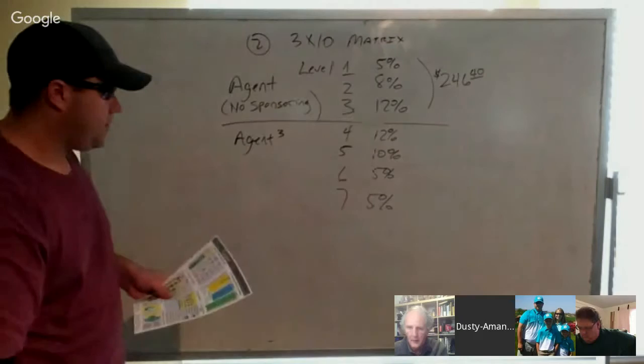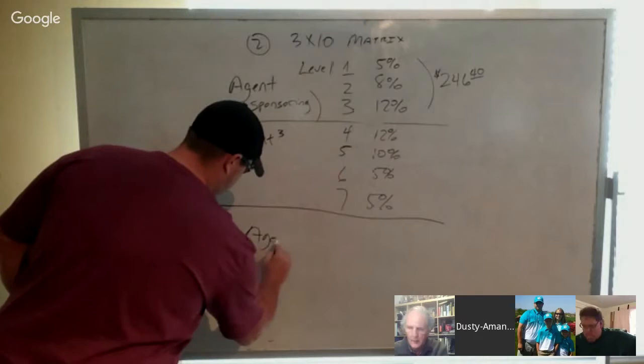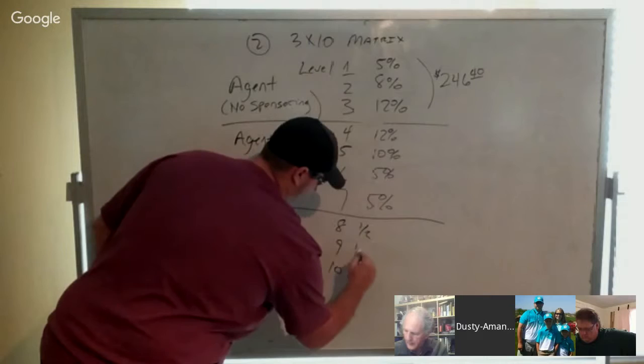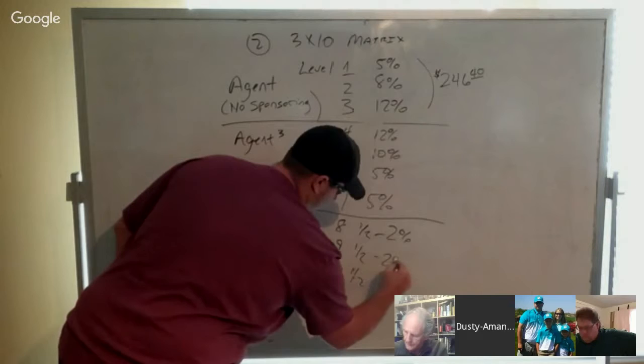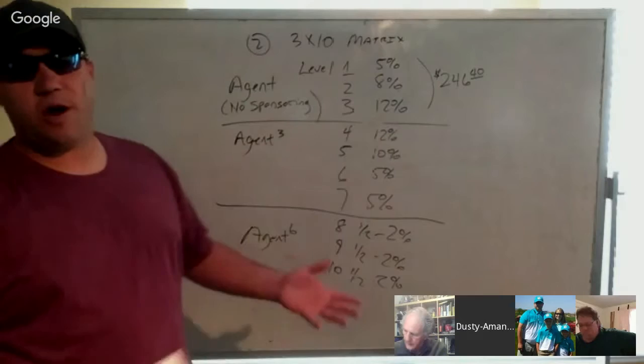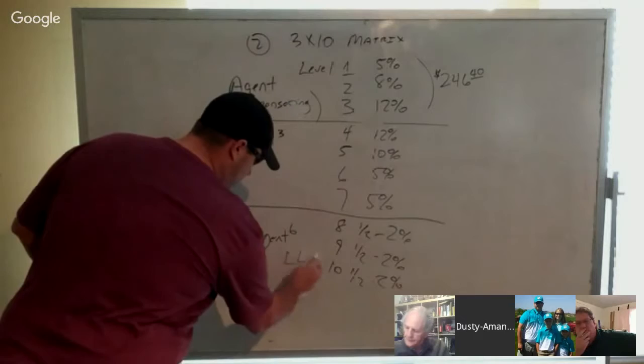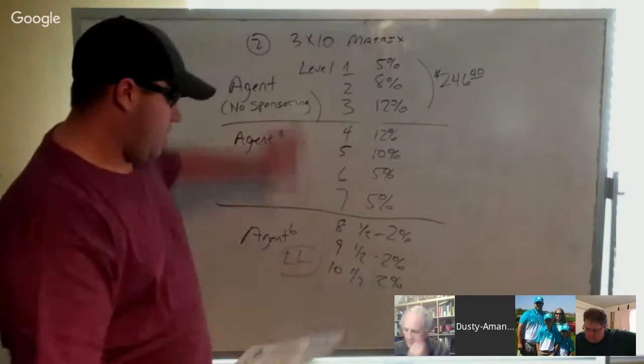As an agent six, we have levels eight, nine, and ten. Those pay anywhere from half percent to two percent. What's the difference, you might ask? It's where you're ranked in the company. We'll talk about rank advancements in a minute. These are called leadership levels. So it's based on your leadership position in the company of how much percentage you have opened up.